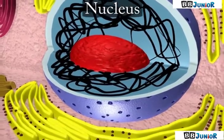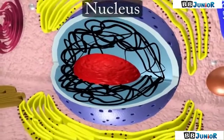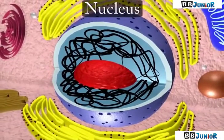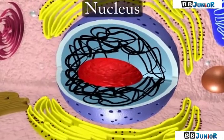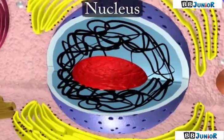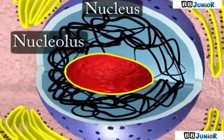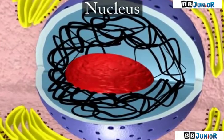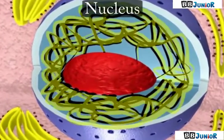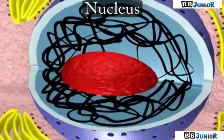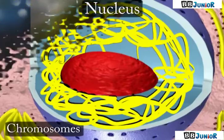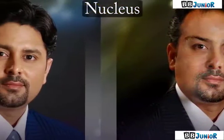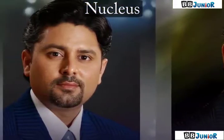With a microscope of higher magnification, we can see a smaller spherical body in the nucleus called the nucleolus. In addition, the nucleus contains thread-like structures called chromosomes. These carry genes and help in the inheritance or transfer of characters from the parents to the offspring.